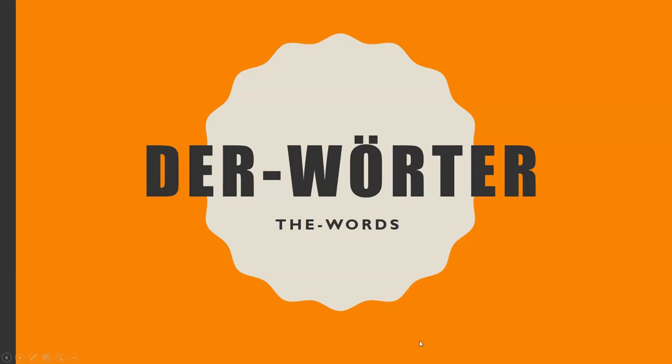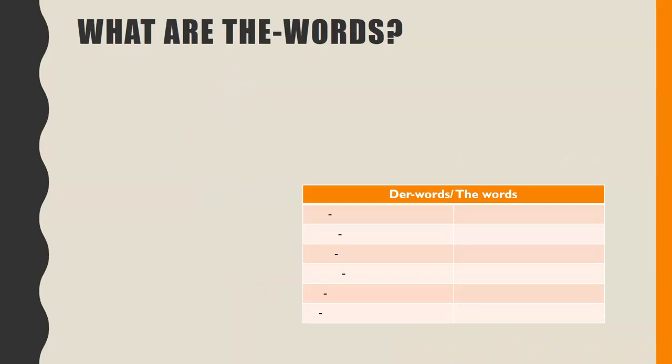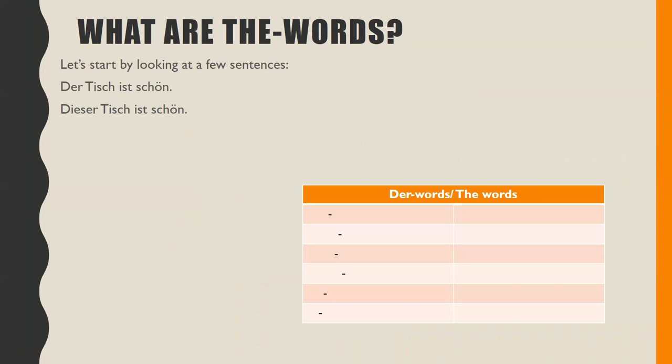This video is about der Wörter, or the words. What are the words? Let's start by looking at a few sentences. Der Tisch ist schön — the table is beautiful. Dieser Tisch ist schön — this table is beautiful.